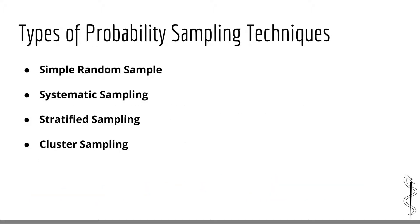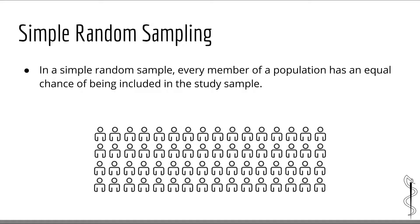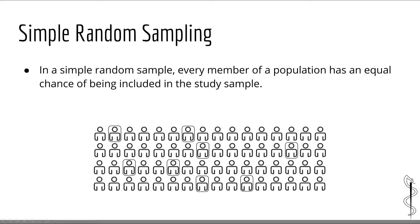Now let's talk about the different techniques for obtaining probability samples. Generally, there are four techniques for obtaining probability samples, and the choice between which to use depends on things such as the characteristics of the population, the resources available, and the types of variables being analyzed in the study. The simplest probability sample is the simple random sample. In a simple random sample, every member of a population has an equal chance of being included in the study. This type of sampling can be thought of as a lottery machine in which every individual is represented by a lottery ball, and random balls are obtained until the target sample size is met.